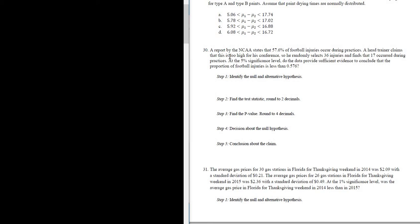Let's do problem number 30. A report by the NCAA states that 57.6% of football injuries occur during practices. A head trainer claims that this is too high for his conference, so he randomly selects 36 injuries and finds that 17 occurred during practices. At the 5% significance level, do the data provide sufficient evidence to conclude that the proportion of football injuries is less than 0.576?